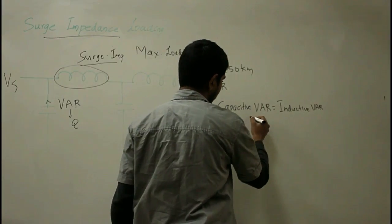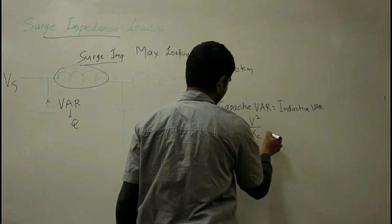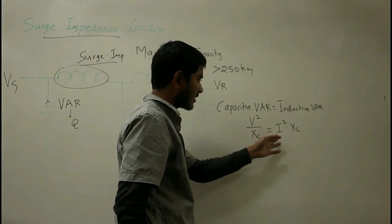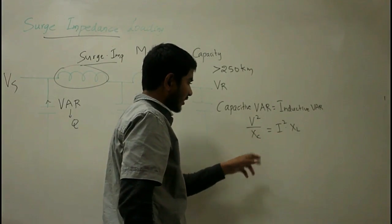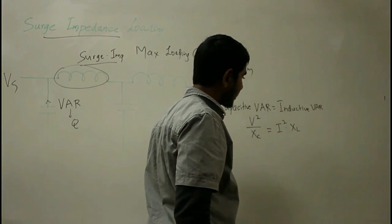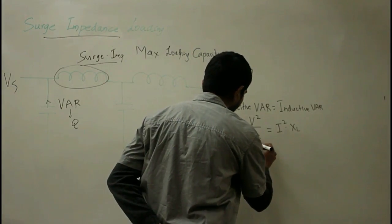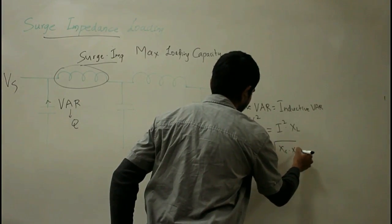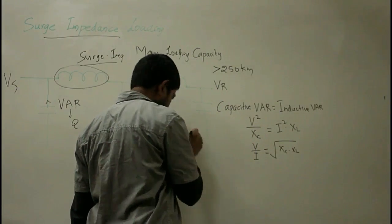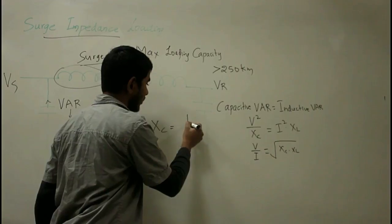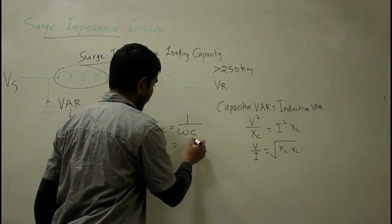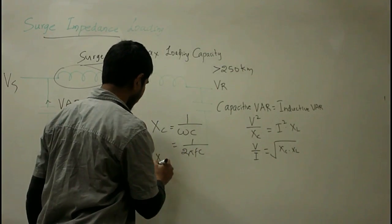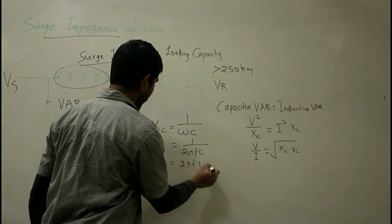Setting capacitive VAR equal to inductive VAR consumed: V² / Xc = I² × XL, where V is phase voltage, I is line current, Xc is capacitive reactance per phase, and XL is inductive reactance per phase. From here, V/I = √(Xc × XL). The capacitive reactance Xc = 1/(ωC) where ω = 2πF·C, and XL = 2πF·L.